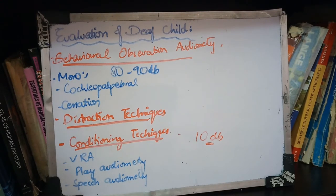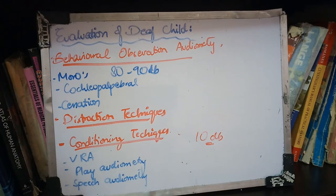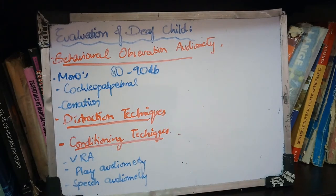Speech audiometry can be performed in children 2 years and older. The child repeats words or sentences that you say. We use different speech stimuli and speak different sentences. If the child can listen and repeat the words, you can determine the degree of hearing loss.